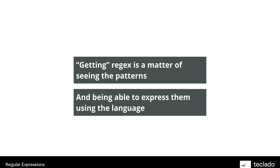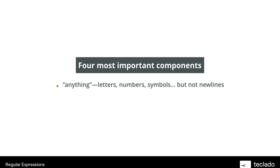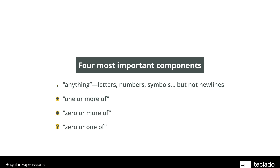I'll tell you there are four most important components in regex — you're going to be using these essentially all the time. First one is the dot: the dot means anything — letters, numbers, symbols, anything you can think of, except new lines. Remember the new line character, backslash N — the dot means anything except that. The plus symbol means one or more of. The asterisk means zero or more of. And the question mark means zero or one of.